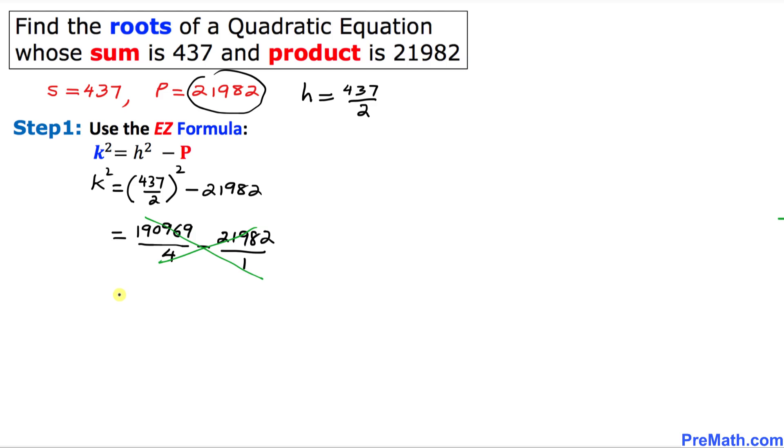When we cross multiply this way first, 1 times 190969 that is going to become 190969. And then we have this negative sign. Let's keep that negative sign as it is. And then we are going to go the other way around, 4 times this other number. That is going to give us 87928.